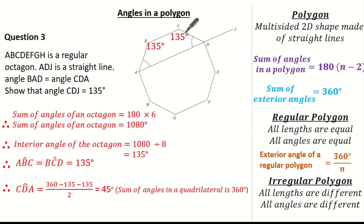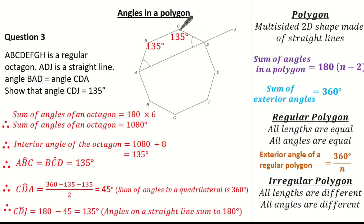Now I can easily work out angle CDJ because angles on a straight line sum to 180 degrees. So CDJ is 180 subtract 45, which is 135 degrees. This confirms what the question told me.